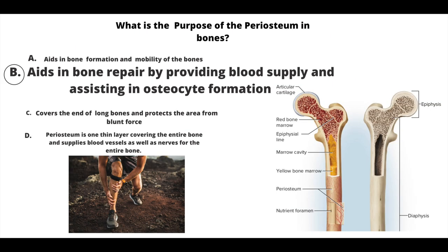Our answer here is B: it aids in bone repair by providing blood supply and assisting in osteocyte formation. Your periosteum is a membrane, a thin membrane that covers the bones except for the joint regions where ligaments and tendons attach to.